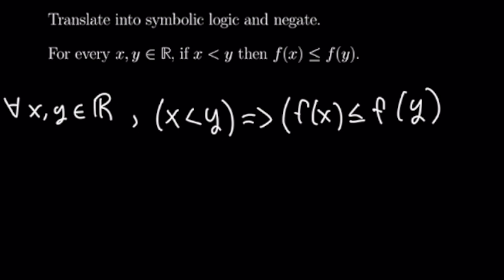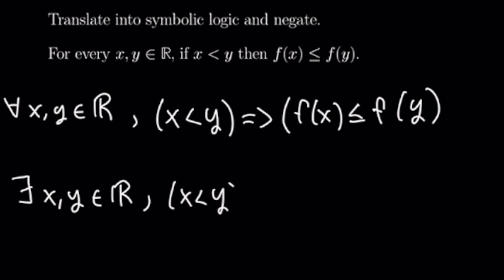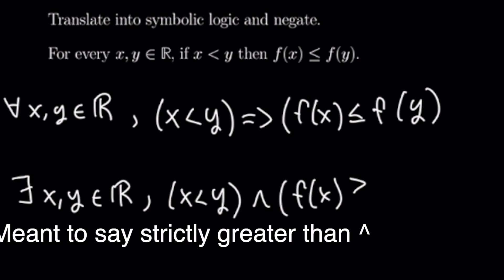So let's go ahead and negate the quantifiers on our setup. We will have: there exists x and y real numbers. And then we negate the conditional statement — we'll have x less than y, and f of x greater than or equal to f of y.